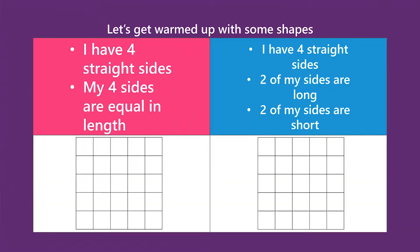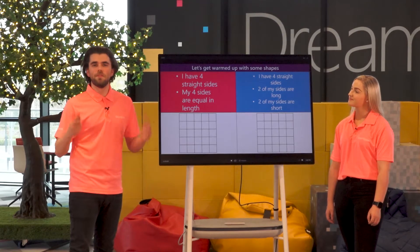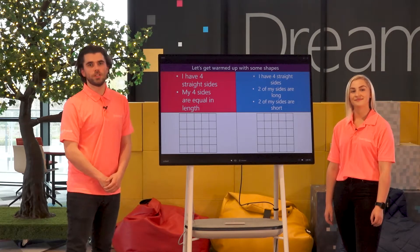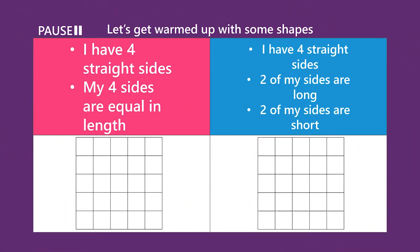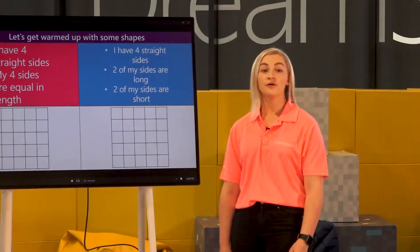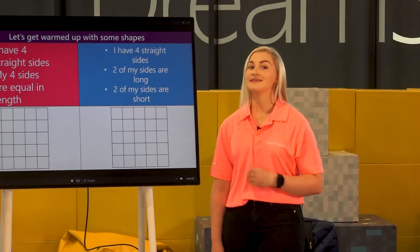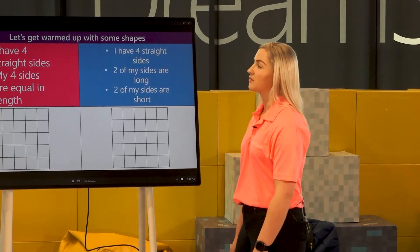Before me and Niamh actually design our pixel characters, we have to get warmed up by drawing some pixel shapes. As we can see here, we have descriptions about our pixel shapes on the screen. But before me and Niamh do it, why not pause the video and see if you can recognize what shapes we're describing. Okay, so I'm sure some of you have figured out what shapes we're describing, but I'm going to describe them to Michael and see if he can figure out what we're describing.